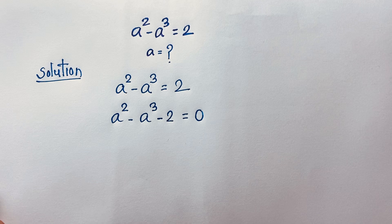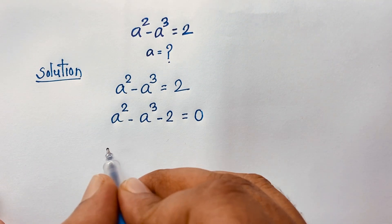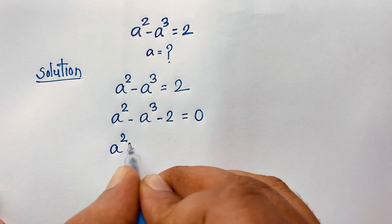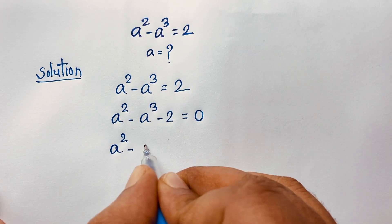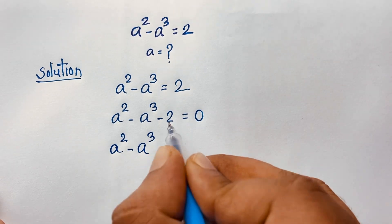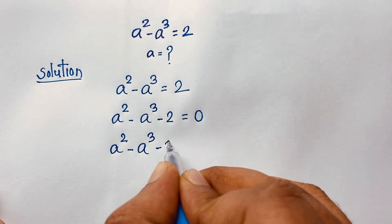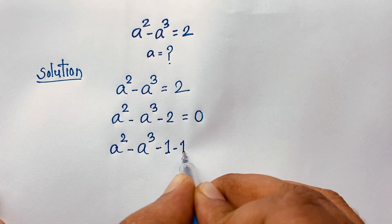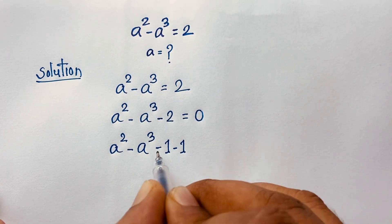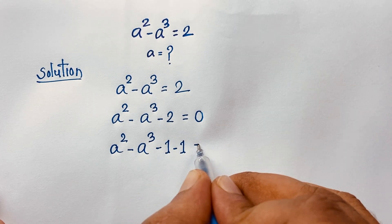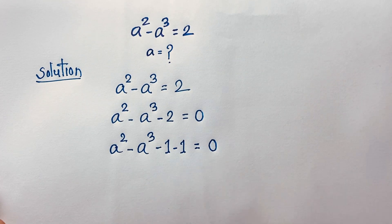Now I can rewrite this expression. The minus 2 can be split as minus 1 minus 1. So we have: a squared minus a to the power 3, then minus 1, minus 1 — since minus 1 minus 1 equals minus 2 — is equal to 0.